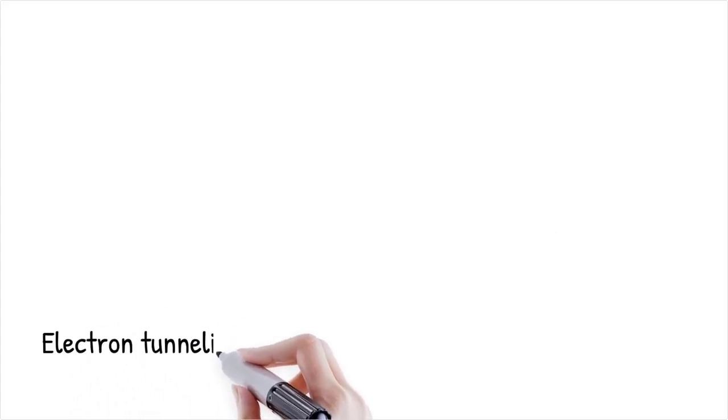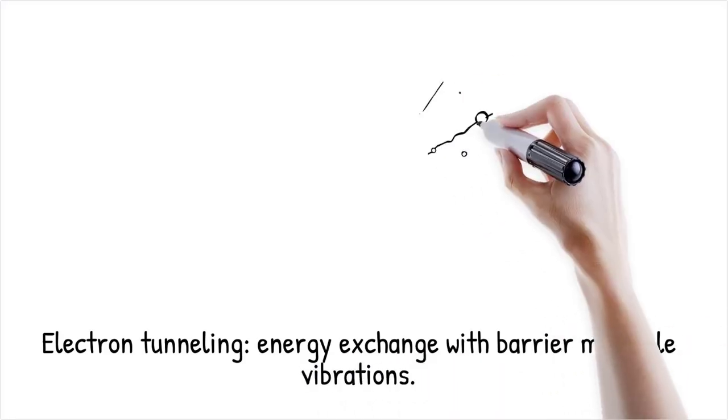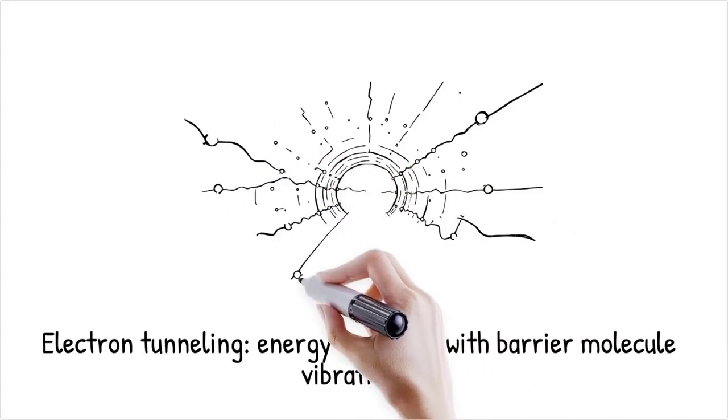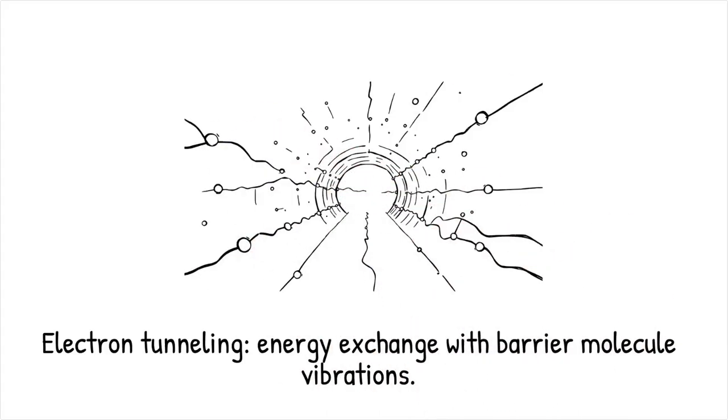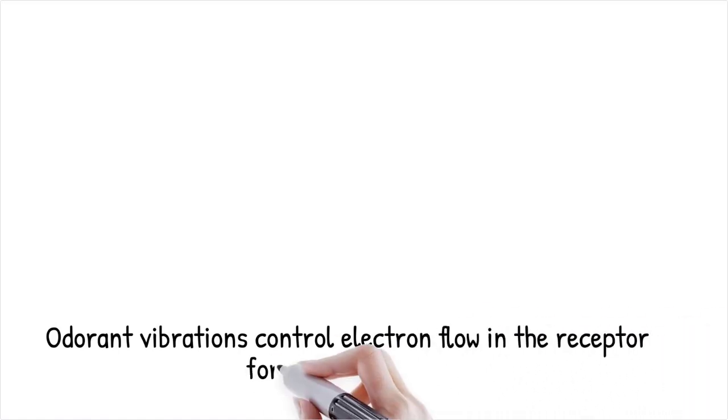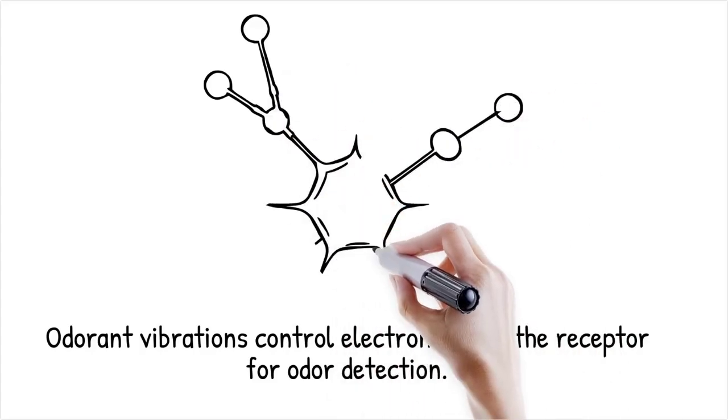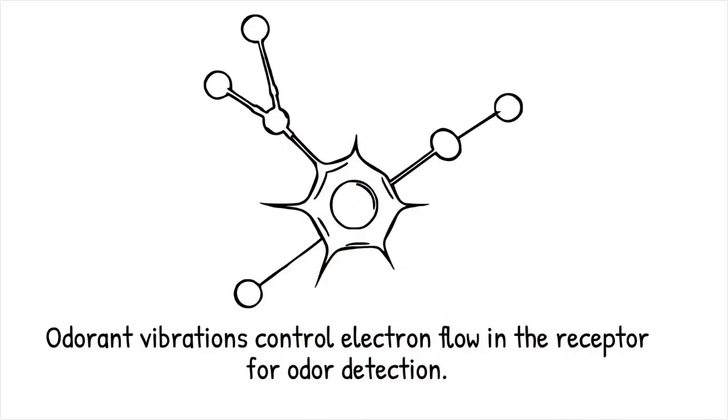Inelastic electron tunneling occurs when an electron traverses a barrier by borrowing energy from or depositing energy into a vibrational mode of the barrier molecule. This process requires the energy quantum of the vibration to match the electron's energy loss or gain, creating a highly selective detection mechanism. Within the receptor, the odorant's vibrational spectrum thus gates electron flow, making the protein transparent only to electrons that satisfy that resonance. Such resonance-mediated tunneling provides the physical basis for vibration-based odor discrimination.